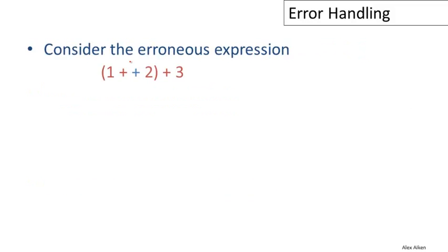Let's look at a simple hypothetical example of panic mode error recovery. Here's an expression that clearly has a problem — we shouldn't have two plus signs in a row, so something has gone wrong at the second plus. The parser proceeds left to right: it sees the open paren, the number one, the first plus — everything is good — then it sees the second plus and doesn't know what to do. It realizes there is no expression in the language that has two plus signs in a row.